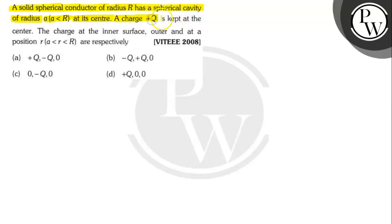A charge plus Q is kept at the center. The charge at the inner surface, outer, and at a position r (A less than r less than R) respectively. Let's find out.